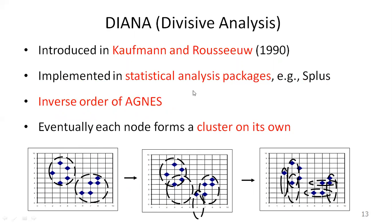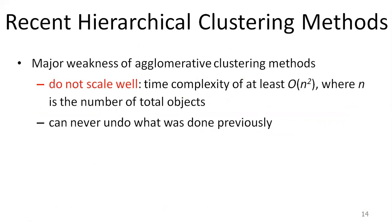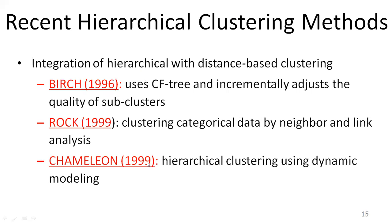Diana was introduced by Kaufman and is implemented in a statistical analysis package. It is a reverse order of the agglomerative. Each node forms its own cluster in divisive analysis. Some weaknesses of the agglomerative clustering method are: it does not scale well, and you can never undo what was done previously. The time complexity is at least order of n squared, where n is the number of total objects. There are also other important hierarchical clustering approaches, including the integration of hierarchical clustering with distance-based clustering.